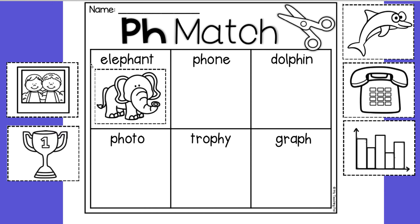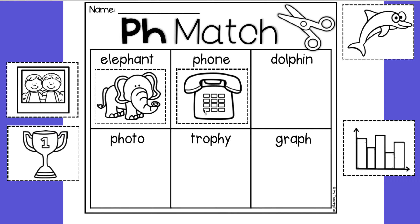Here's my next one. I have my PH — I know that says 'ph.' I'm also going to look at my word. I see the sneaky silent E. I know the sneaky silent E makes the O say 'O.' F-O-N. Phone. So I'm going to find the phone. Here it is, and put it there.